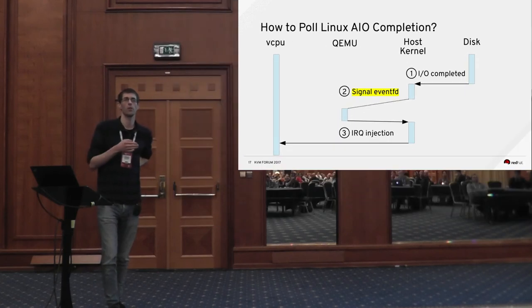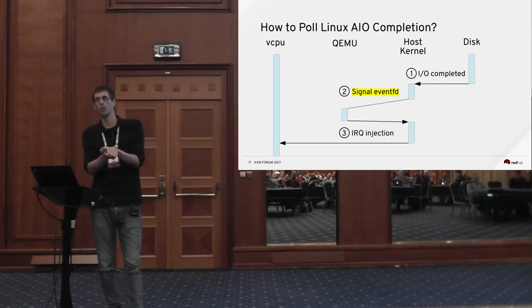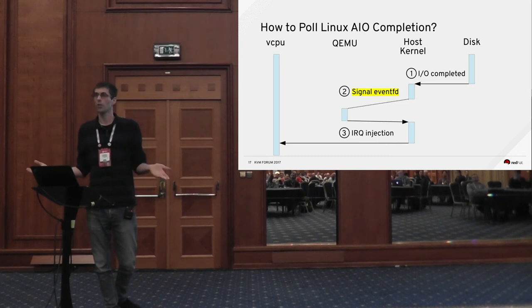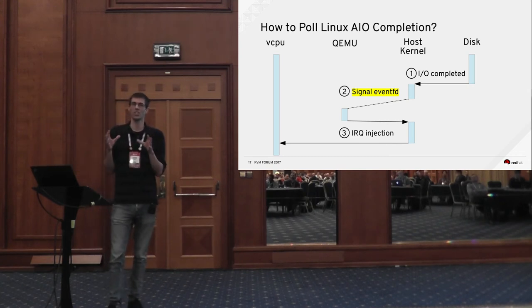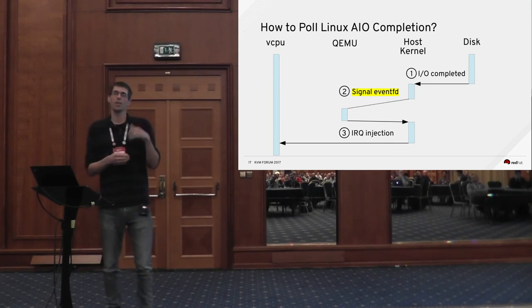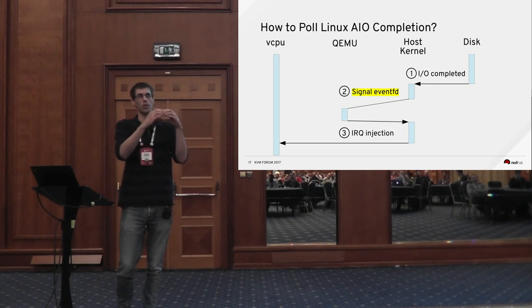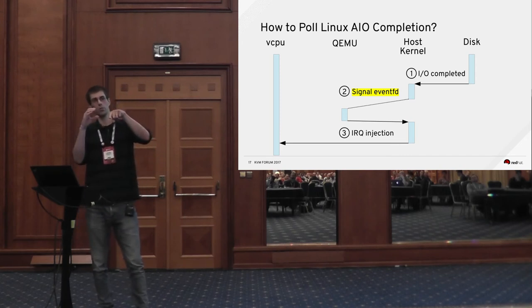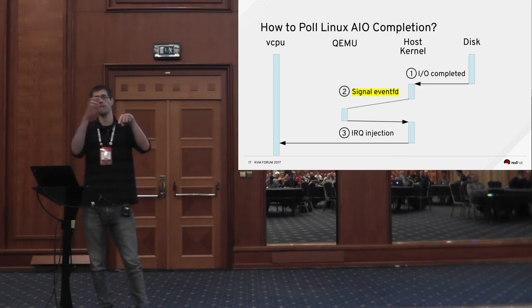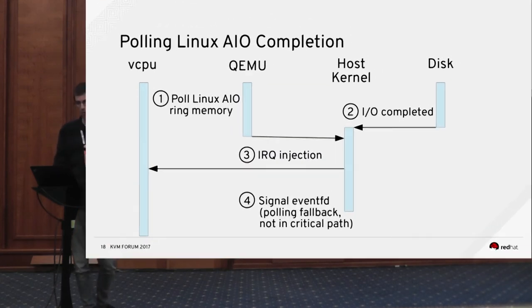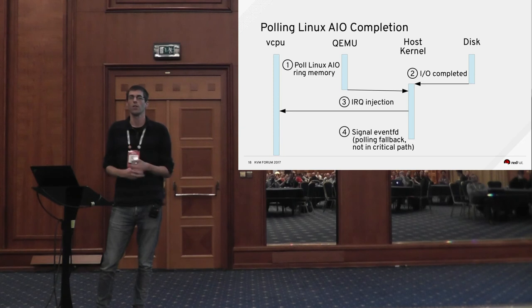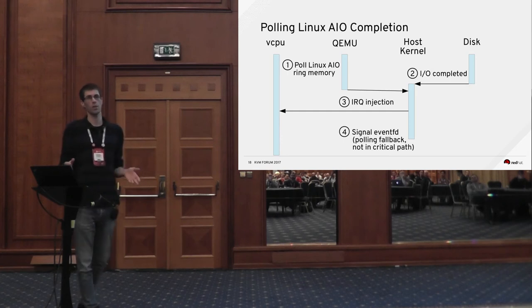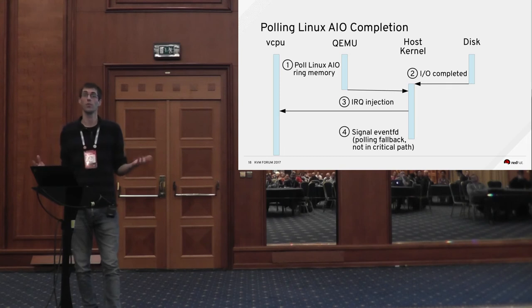For Linux AIO: once we've passed the request to the kernel, can we poll that? It turns out we got lucky — the userspace kernel API actually allows polling. Linux AIO has a piece of memory, a ring, shared between the kernel and user space. Whenever Linux AIO in the kernel completes a request, it marks it in the user space ring. You can actually just poll that ring directly. This won't work for every type of file descriptor — you can't poll everything — but for VirtioBlock and VirtioSCSI, these two mechanisms mean we can really do polling integrated into the QEMU event loop.